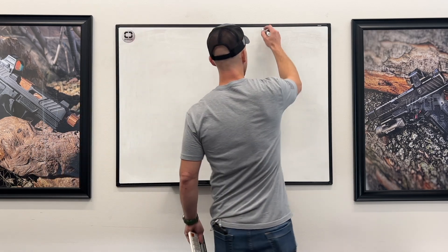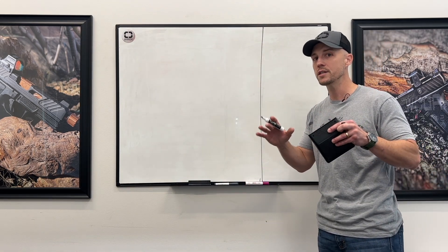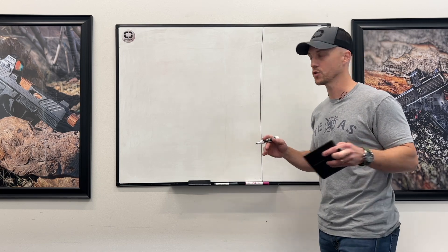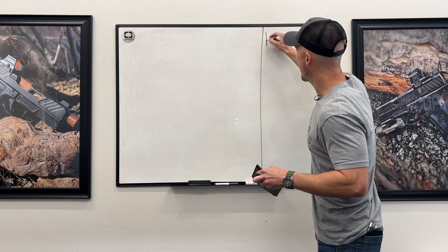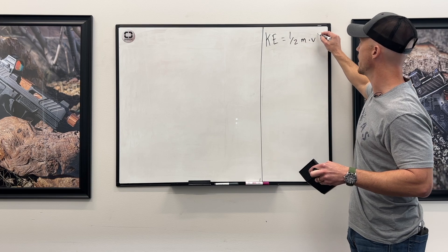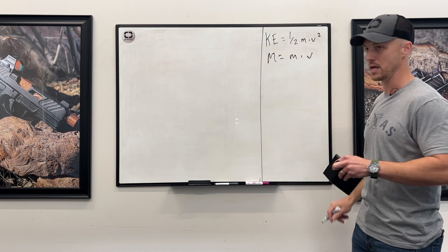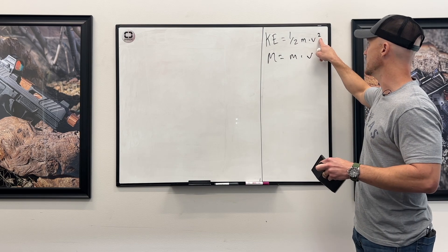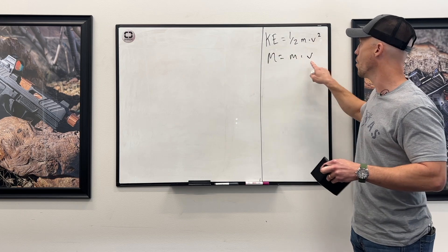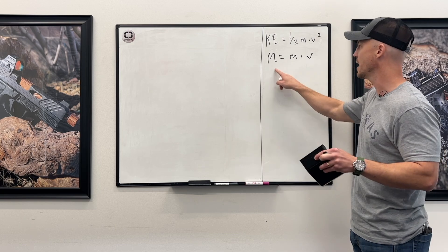So really it comes down to a discussion about momentum versus energy — kinetic energy, which we usually call muzzle energy in this world. Going back to physics: kinetic energy is one half mass times velocity squared, whereas momentum is mass times velocity. You'll notice that velocity is squared in the energy equation, so velocity is a big part of it, whereas mass and velocity are basically evenly matched in the momentum world.